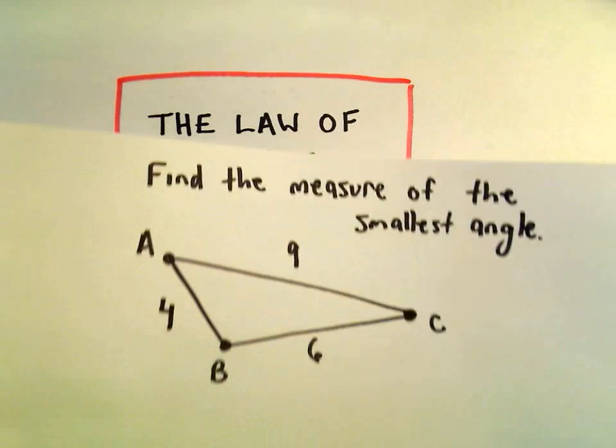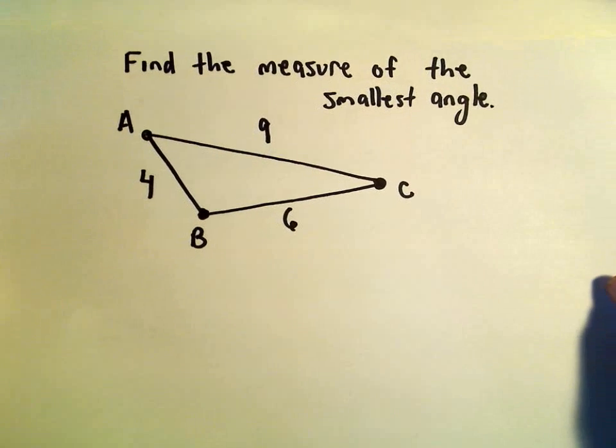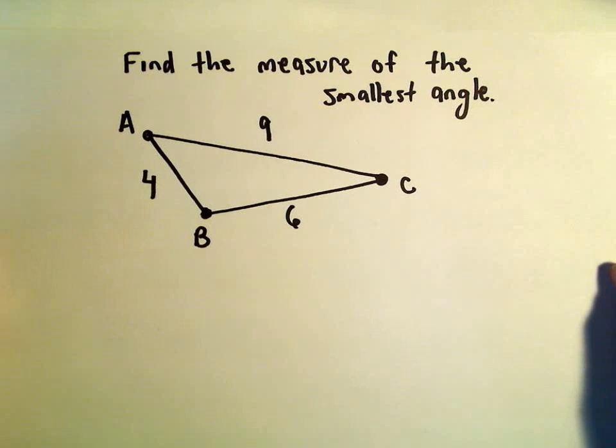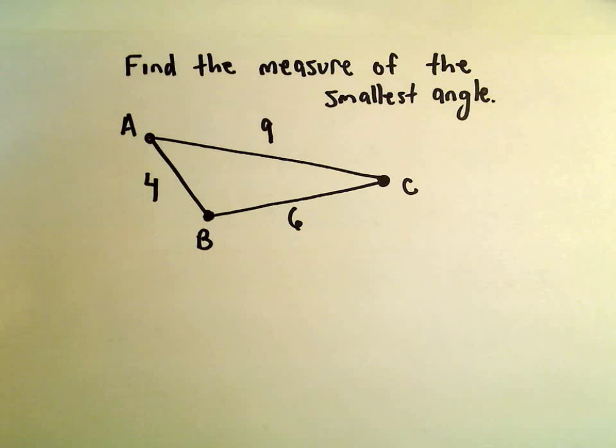In this video we're going to do another example related to the law of cosines. What we want to do here is find the measure of the smallest angle in our given triangle.